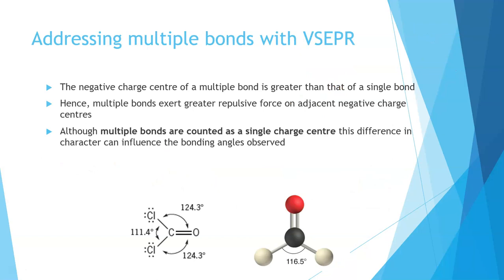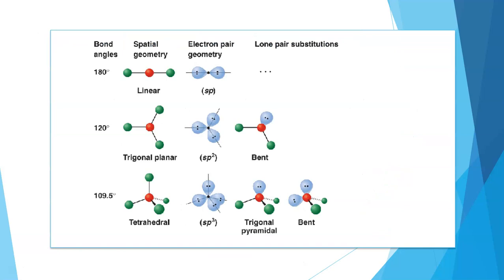VSEPR theory also allows us to deal with double bonds when working out shape. Double bonds are considered a single negative charge center — one bonding site. So in a molecule with a double bond, two Cl atoms, and no non-bonding pairs on the central atom, we count three things attached to the central atom, giving us a trigonal planar arrangement.